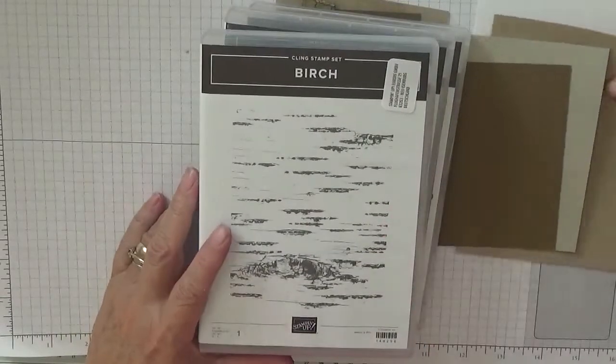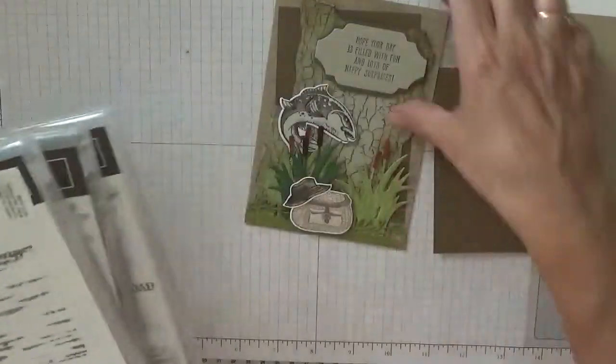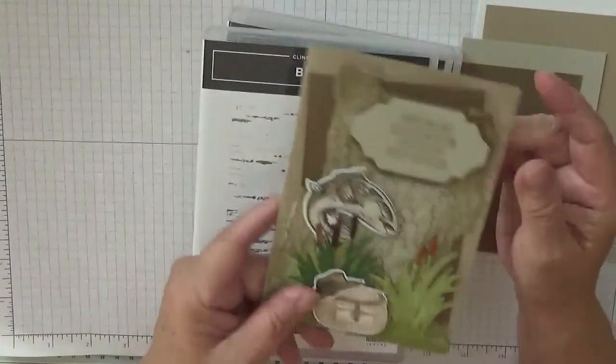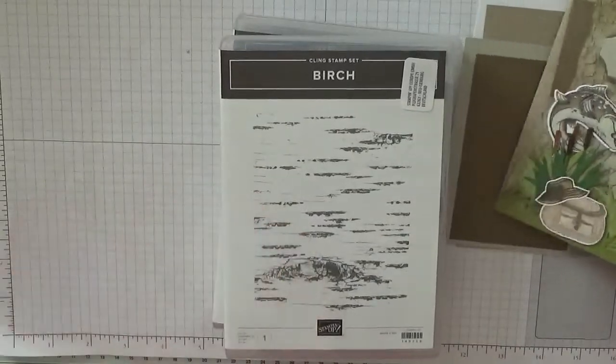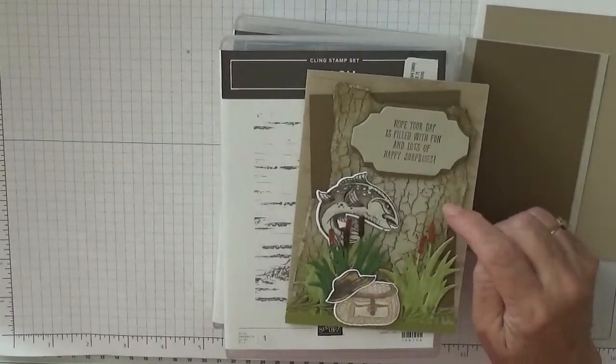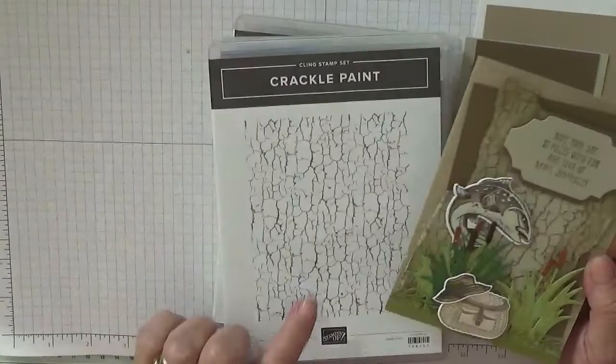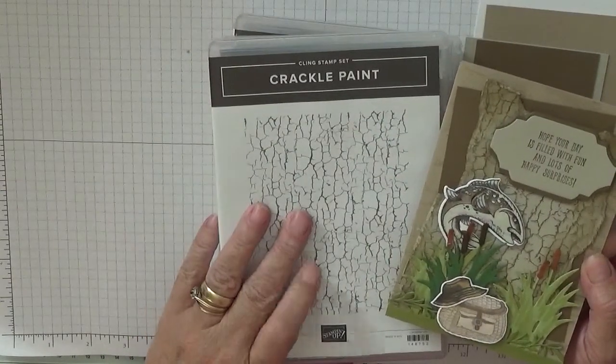For the background, the background we have on the actual card base I used the birch stamp, and then on the Sahara sand piece I used crackle paint.